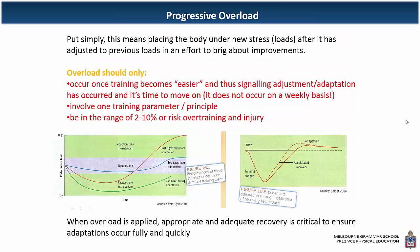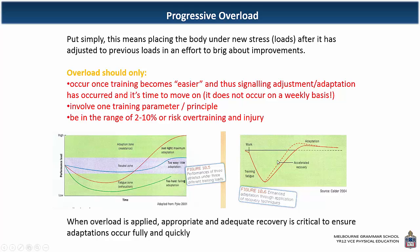Progressive overload is where you add one of those variables — weight, reps, or sets — but only by 10%. You might also decrease the rest; for example, in an interval training session, you might decrease the rest so the individual performs more and rests less. Progressive overload should be applied when the individual has already undergone adaptations so they can build upon the physical characteristics they've already gained. If someone has performed to exhaustion and you overload too soon, they won't get the adaptation. It needs to be hard and at an appropriate time.